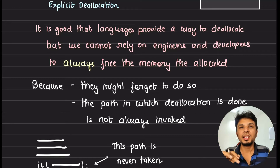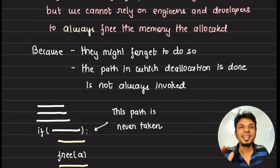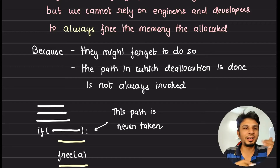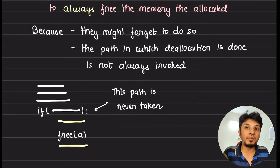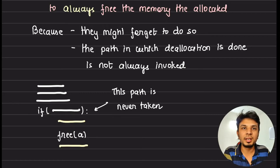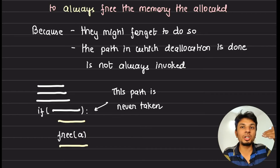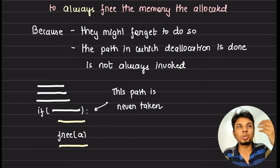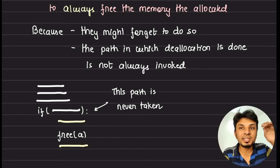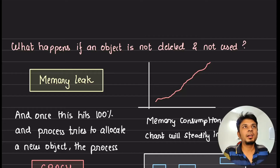This is very risky because engineers might forget to clean up allocated objects. Or they might write code where the 'free' call is inside a particular 'if' path — so unless that path is taken, the free is never invoked. The object is only deleted in certain cases and not others. It's very unpredictable when you hand off cleanup to engineers or rely on explicit deallocation in code.